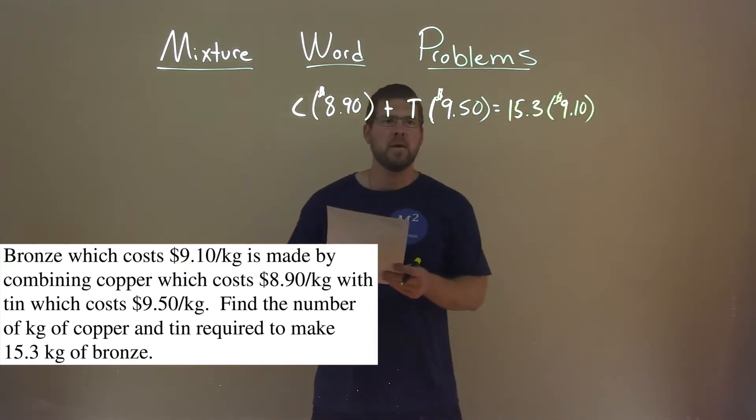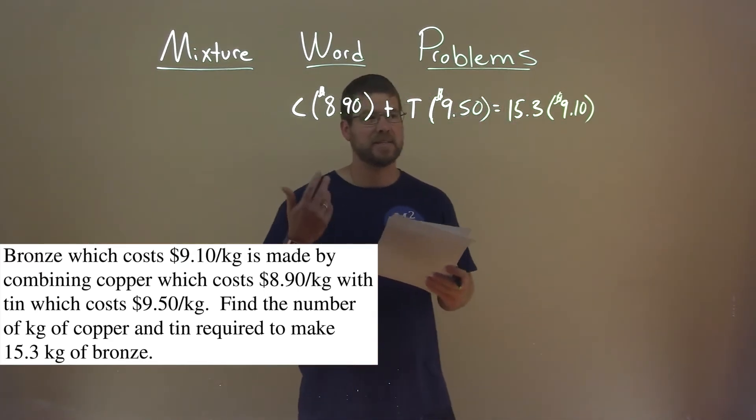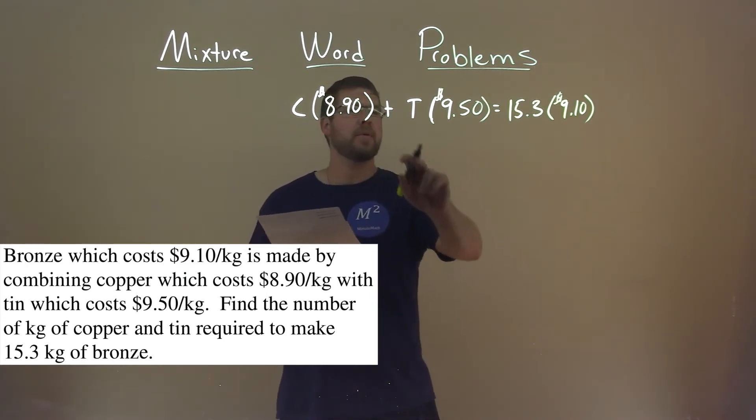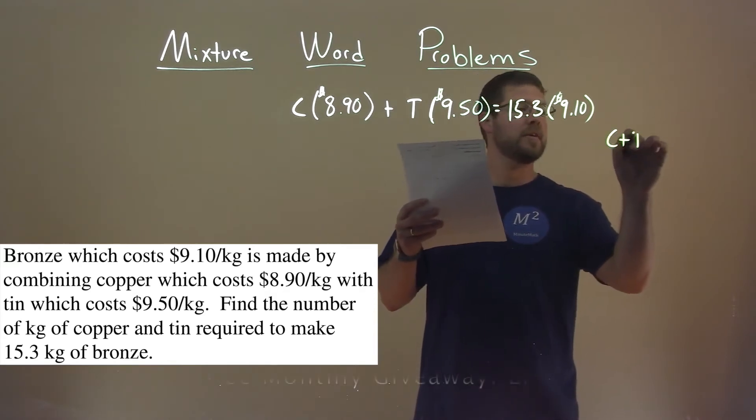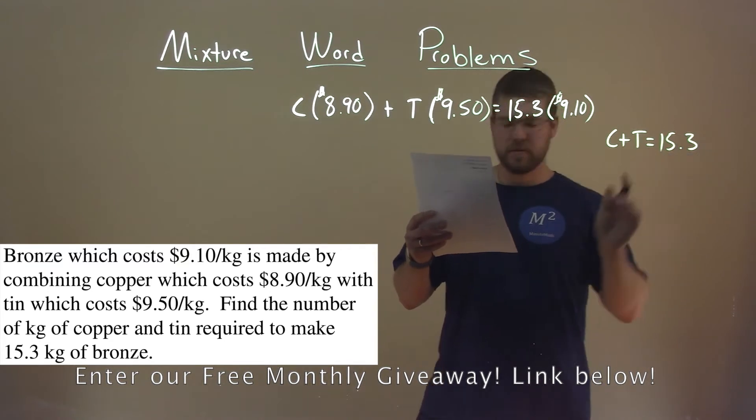Alright. Well, we have one equation here, but we have two variables. We need to create a second equation. Well, the kilograms of copper and tin need to add up to be the kilograms of bronze. So C plus T should equal 15.3.